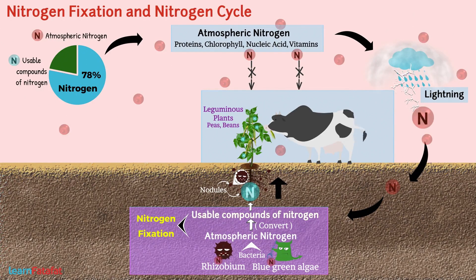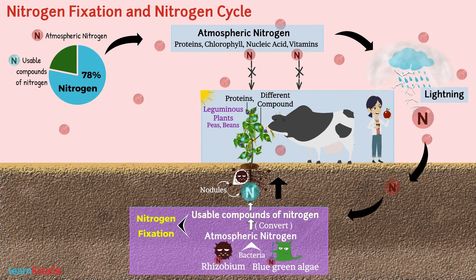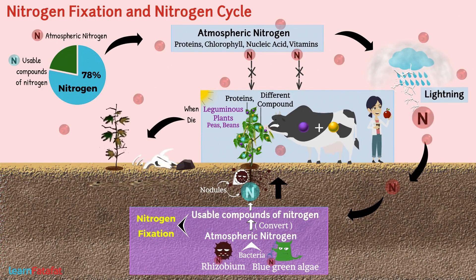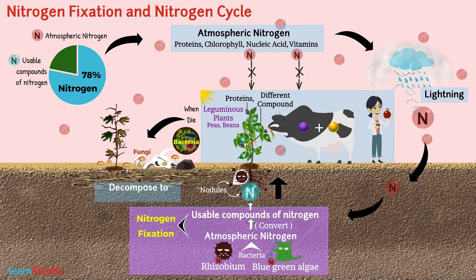The absorbed nitrogen is used for the synthesis of plant proteins and different compounds. All animals, including us, get these proteins and other nitrogen compounds from plants. When plants and animals die, bacteria and fungi present in the soil decompose them into nitrogenous compounds, which are again taken in by the roots of plants.